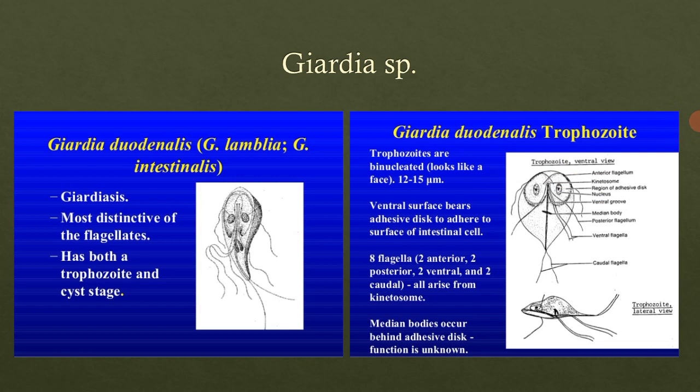Coming to the Giardia duodenalis trophozoite form: these trophozoites are binucleated — two nuclei are present — and they look like a face. They have a size of 12 to 15 micrometers. The ventral surface bears an adhesive disc that will adhere to the surface of the intestinal cells.